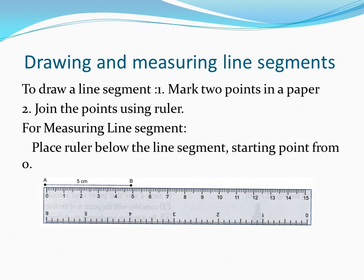Next, we will see how to draw an unmeasured line segment. To draw a line segment, mark two points on a paper, then join the points using a ruler. For measuring a line segment, place the ruler just below the line segment. The starting point should be at zero — the ruler's zero and the starting point of the line segment should be at the same place.